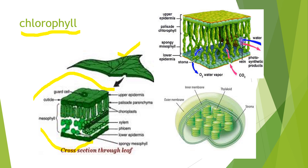The layers are: the upper epidermis, the palisade cells below that, the mesophyll cells, and the lower epidermis. The upper epidermis and the lower epidermis enclose structures in between, which are all filled with chloroplasts.